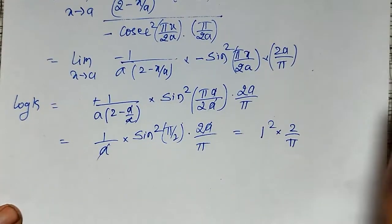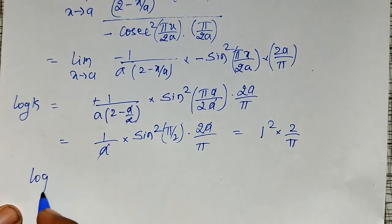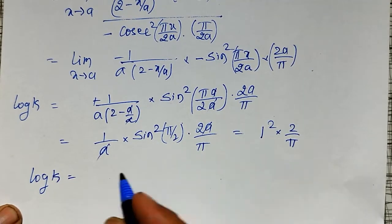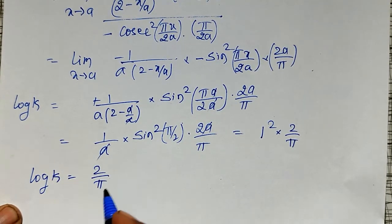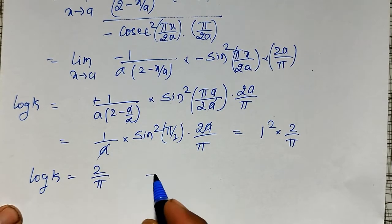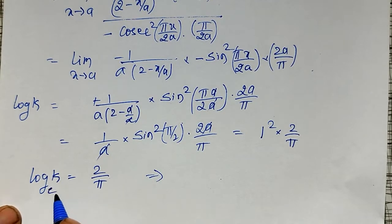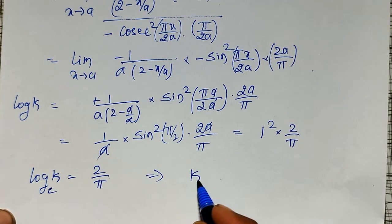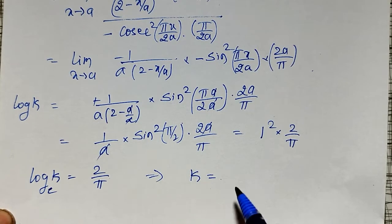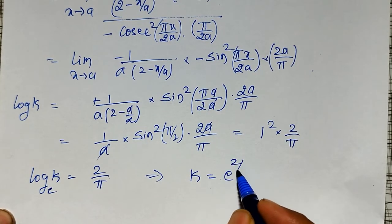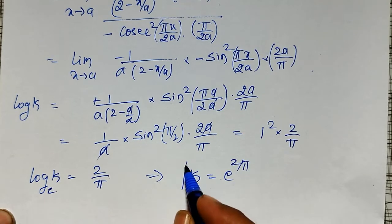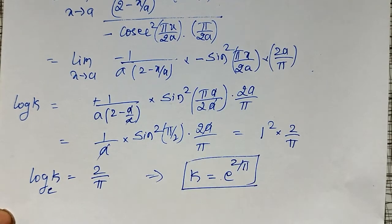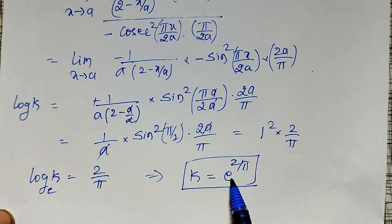Therefore log k equals the finite number 2/π. Since log is to base e, this implies k equals e to the power 2/π. This is the required value — the limit equals e^(2/π).